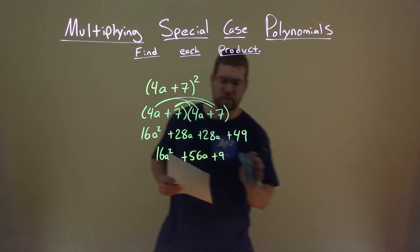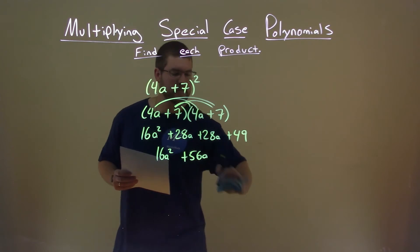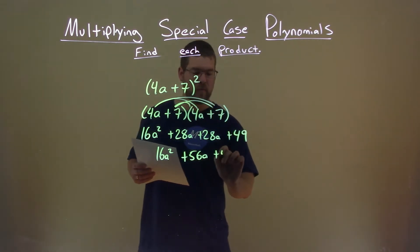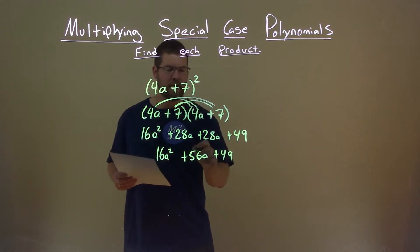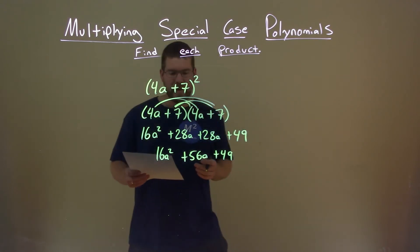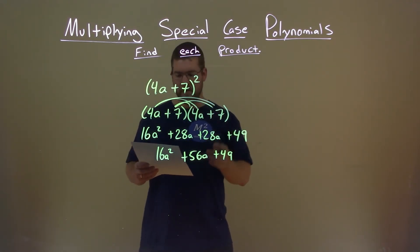Oops, make sure you bring down not just a 9, but a 4 too, plus 49. And there we have it, our final answer: 16a squared plus 56a plus 49.